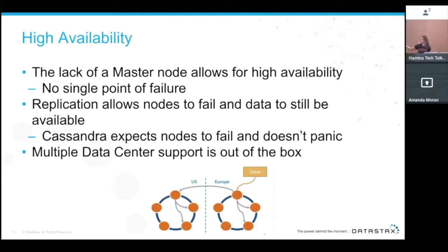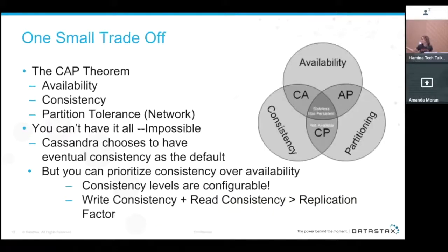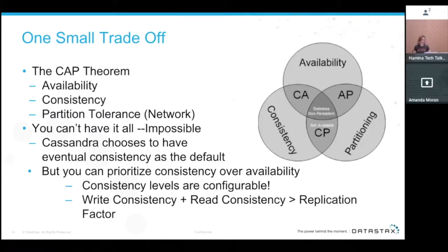Cassandra also has multiple data center support right out of the box — you can have a US data center and a Europe data center configured via a YAML file. Now for one small trade-off: this all revolves around the CAP theorem — availability, consistency, and partition tolerance. A database cannot have all three simultaneously.